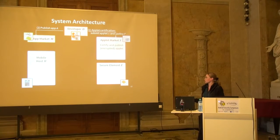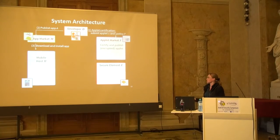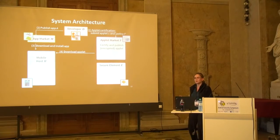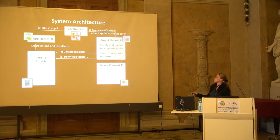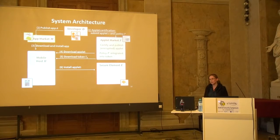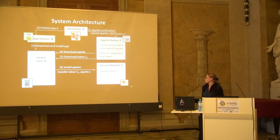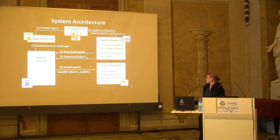When a mobile device downloads and installs the application, it detects that the application has applet dependencies and downloads the applet from the applet market, also fetching a so-called installation token. This installation token includes the policy provided by the developer. The mobile host then requests the secure element to install the applet, providing the token. The secure element verifies the token, decrypts the policy, and installs the applet.